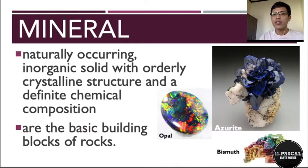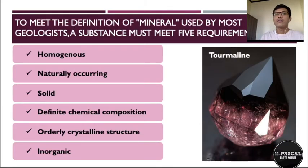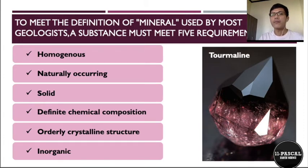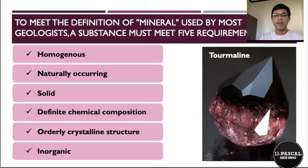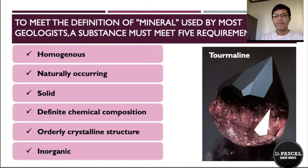On screen you can see different images of economically important minerals — for example, opal, azurite, and bismuth. To meet the definition of a mineral, most geologists have the following requirements: it has to be homogeneous, naturally occurring, solid, have a definite chemical composition, have an orderly crystalline structure, and be inorganic.